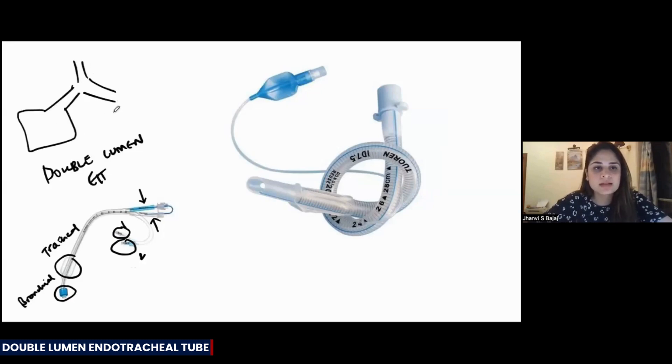Suppose this lung has a tumor on it. You want to operate on this tumor. So you want this lung to be deflated during the surgery and only one lung to be ventilated. This one will be ventilated and the other one will be deflated. For this, we use the double lumen tube.